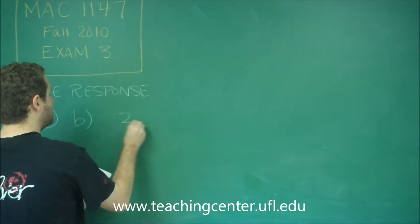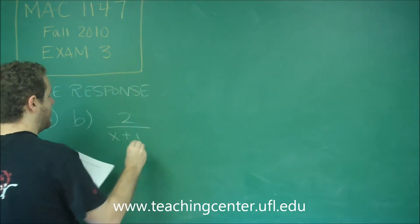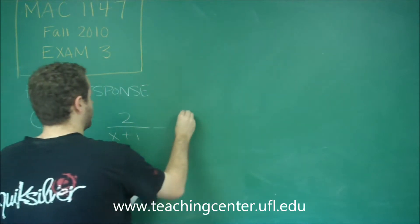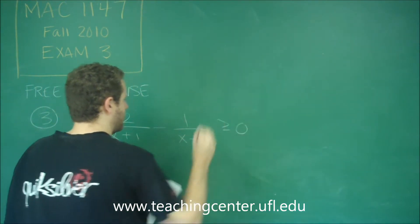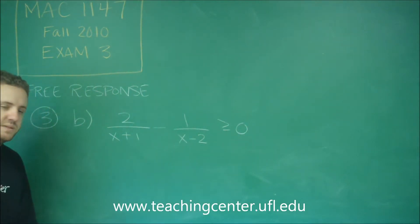So what I am going to do here is take the 1 over x minus 2 and subtract it over. So I am just going to start with that, greater than or equal to 0.